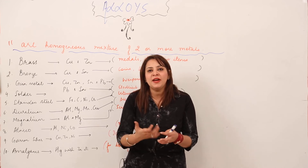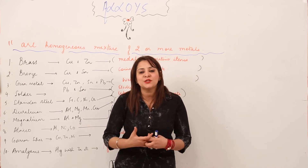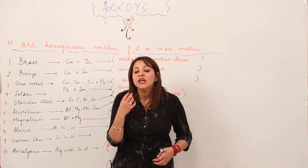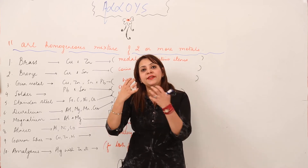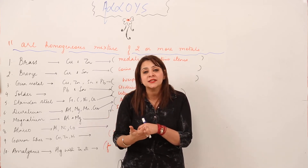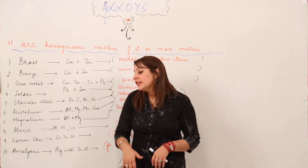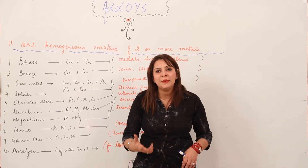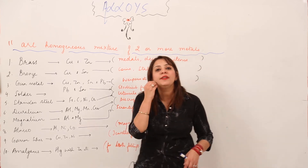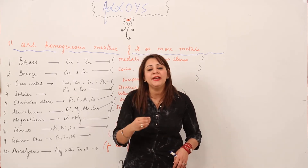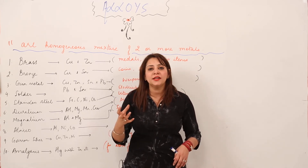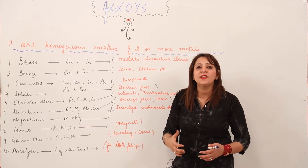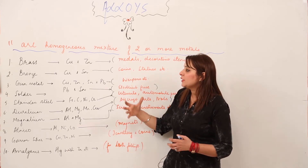Next we have amalgam. You may not know the name but you have seen it. When you eat sweet substances you get cavities in your teeth, and the dentist fills that cavity with a white-colored substance — that is amalgam. Amalgam is an alloy of mercury, which is usually alloyed with zinc or sodium-like metals. It is used by dentists for tooth filling in order to prevent attack by microorganisms in the tooth.